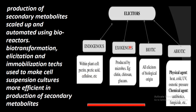Exogenous elicitors are produced outside the plant by microbes, and include chitin, chitosan, and glucans. When living things act as elicitors to stimulate secondary metabolite production, they are called biotic elicitors.